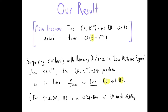This is surprising because in the large distance regime — for example when k is Ω(n) — the algorithm for Hamming distance solves this problem in essentially constant time, but the lower bound for edit distance shows we need √n time. So in the large distance regime there is a separation, but our result shows that in the low distance regime the complexity of the two problems is very similar.